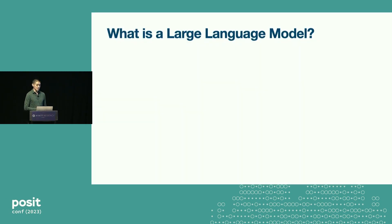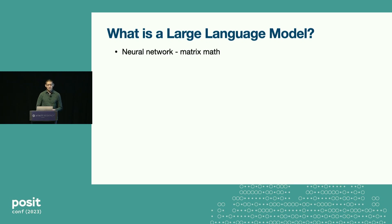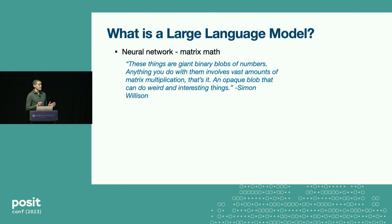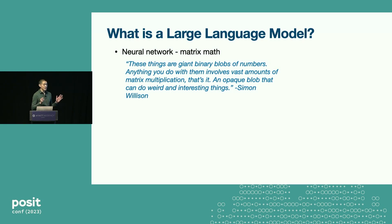So what is a large language model? Well, there are a lot of different levels at which you can look at this question. At one level, it's a neural network, and a neural network involves a lot of matrix math. There's a quote by Simon Willison, who thinks about this stuff a lot: "These things are giant binary blobs of numbers. Anything you do with them involves vast amounts of matrix multiplication — that's it. It's an opaque blob that can do weird and interesting things."